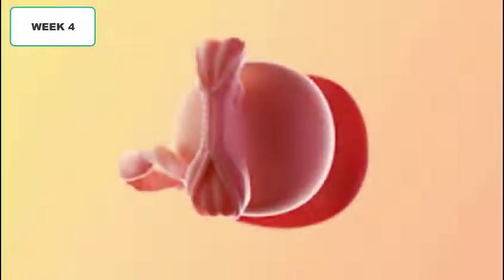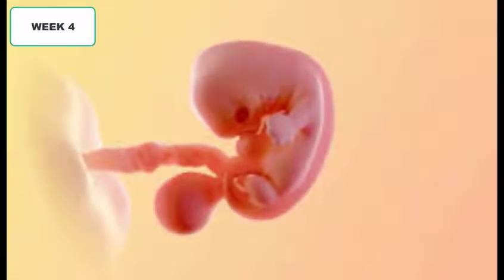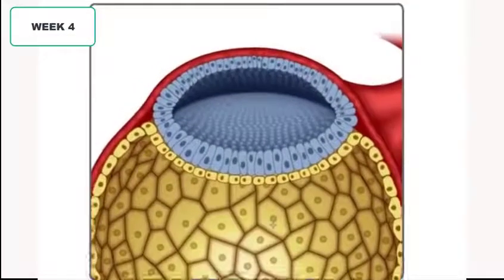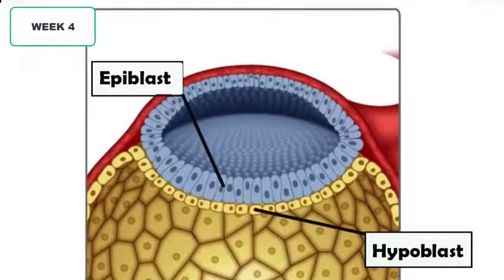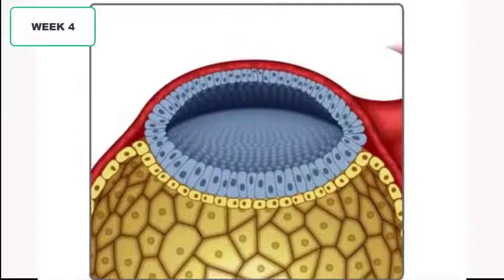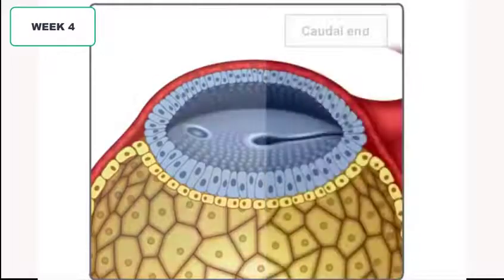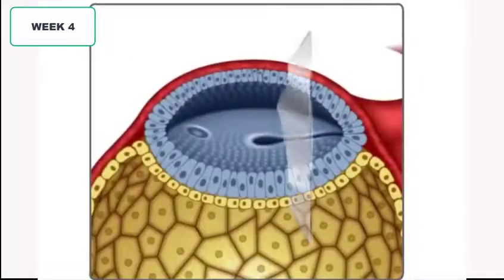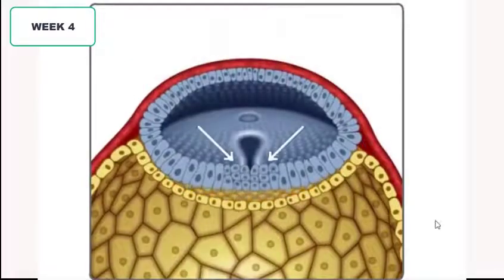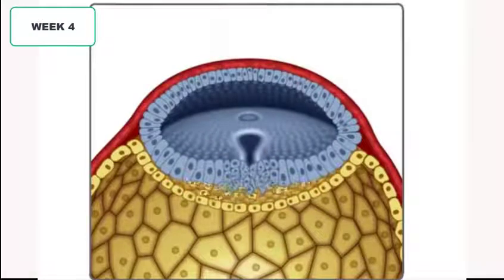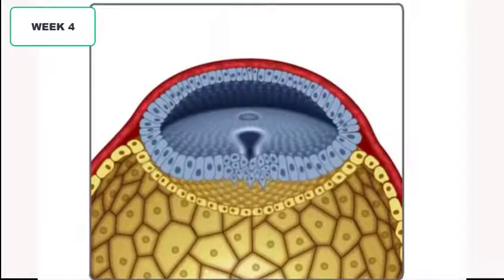The zygote now starts shaping itself into a fetal-like organism called an embryo. The embryo starts forming a bilaminar cell layer — the epiblast on top and the hypoblast below. A cleavage forms miraculously from the center of the epiblast cell and marks a cranial end and a caudal end of the developing embryo. Then the two layers separate and a new cell layer is rapidly formed in between, resulting in a trilaminar disc of three cell layers.